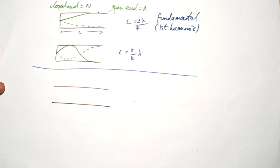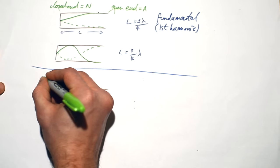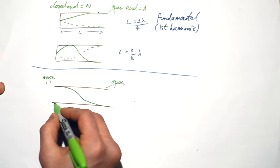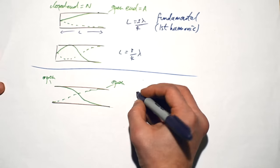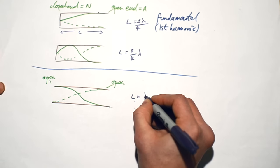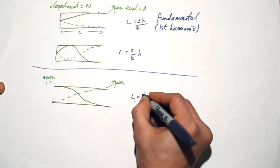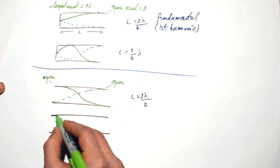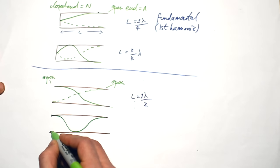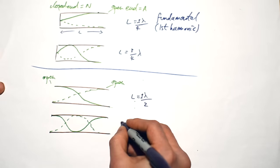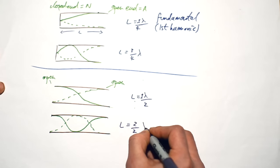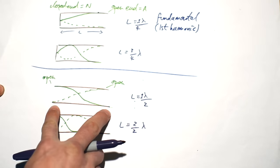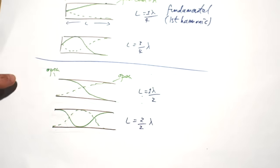What about a tube open at both ends? You'll have an antinode at each end. The simplest standing wave — the fundamental — is L = λ/2. The next one gives a whole lambda. This actually follows the same pattern as the string: L = nλ/2, but with antinodes at each end instead of nodes.